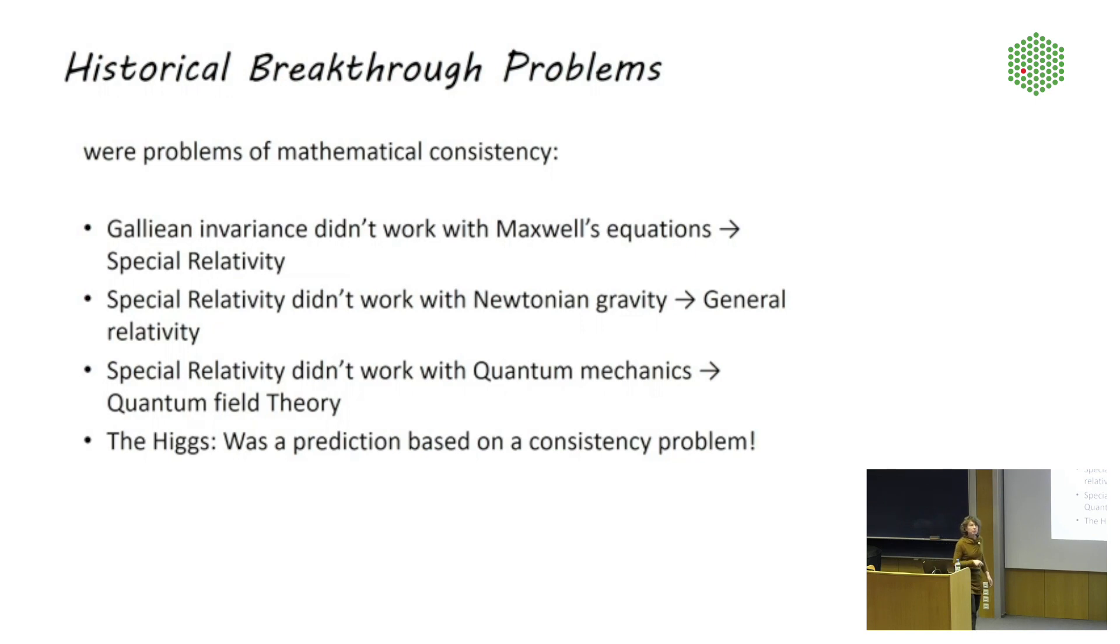The Higgs, too, was a prediction based on a consistency problem. Without the Higgs, you just cannot make predictions with the standard model at the energies that the LHC probes. The theory just does not work. This in and by itself does not tell you that this consistency has to be solved by the Higgs. It only tells you that something had to happen at the Large Hadron Collider. The Higgs was the simplest way to solve that problem. And the Higgs was the correct one. But before we had the LHC, there were other options on the table.